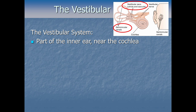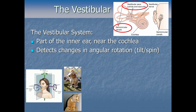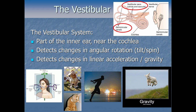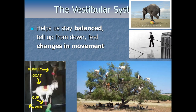The sensory receptors in the vestibular system give us two important sources of information. First, they detect changes in angular rotation — meaning tilt or spin — like when a ballerina spins in circles, when you lean forward, or when a boat rolls to one side. These orientations are called yaw, pitch, and roll. Second, there are receptors that detect changes in linear acceleration — acceleration in a straight line — which includes acceleration due to gravity, or a car starting to move forward.